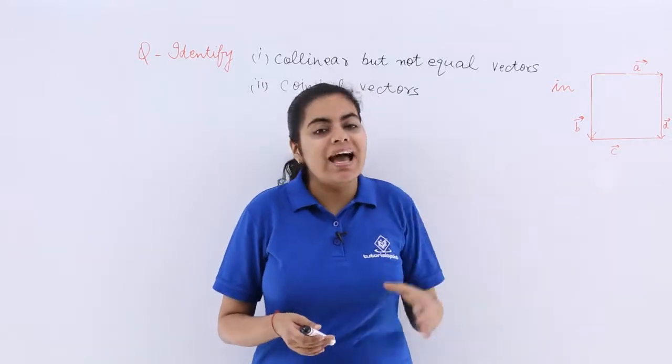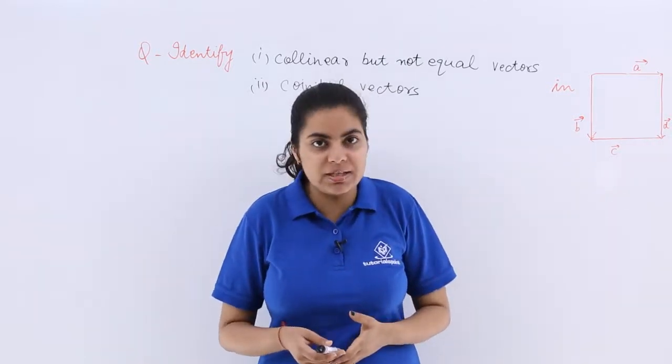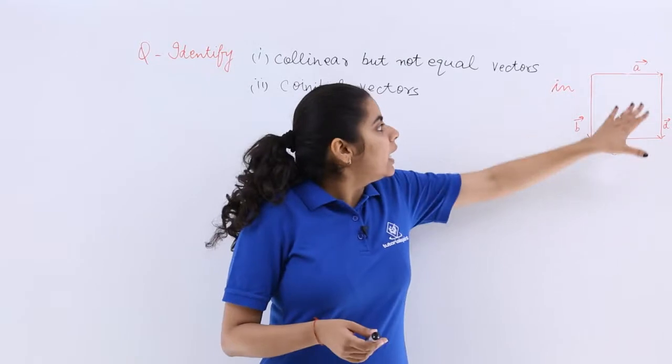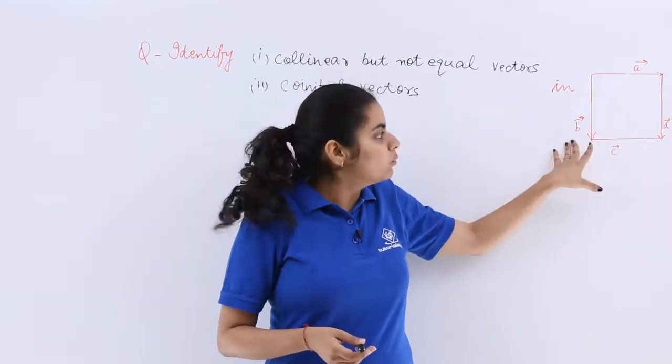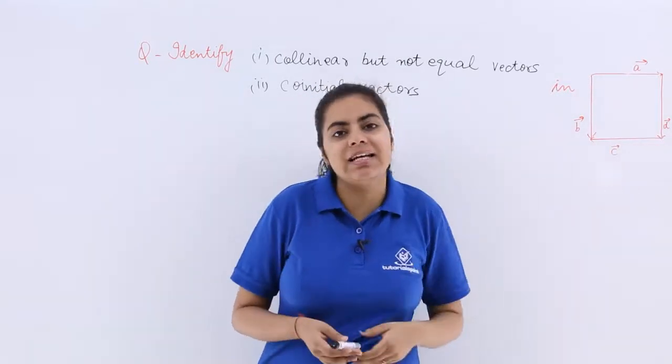So this is a square and this square has different types of vectors, different types of size. A vector, C vector, B vector, D vector. These are the given vectors.